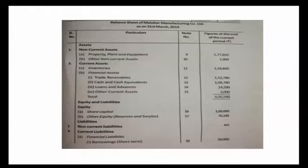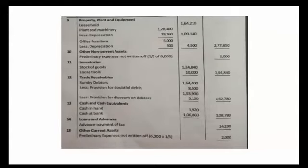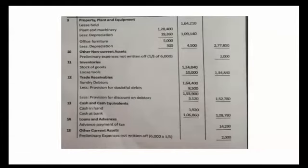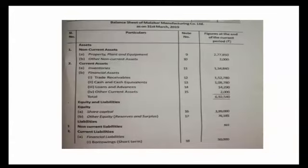Loans and advances — Note No. 14. Current assets loans and advances: advance payment of tax. Loans and advances balance: 4,290 — advance tax paid. Other current assets — Note No. 15. One item is preliminary expenses to be written off within 12 months. One portion is a current asset: 2,000. Total assets: 6,92,540.